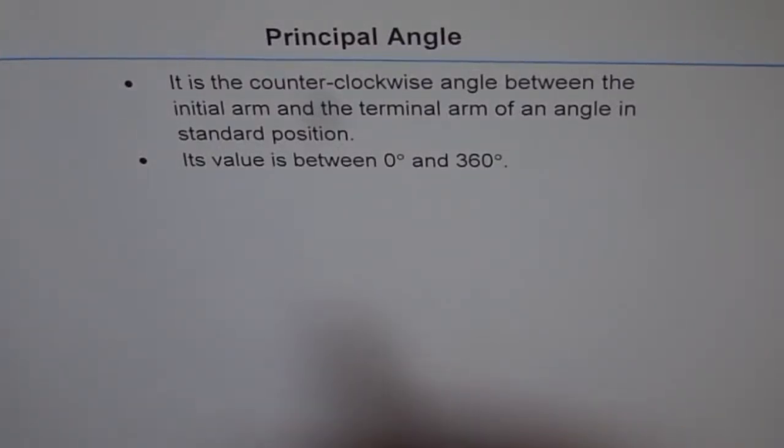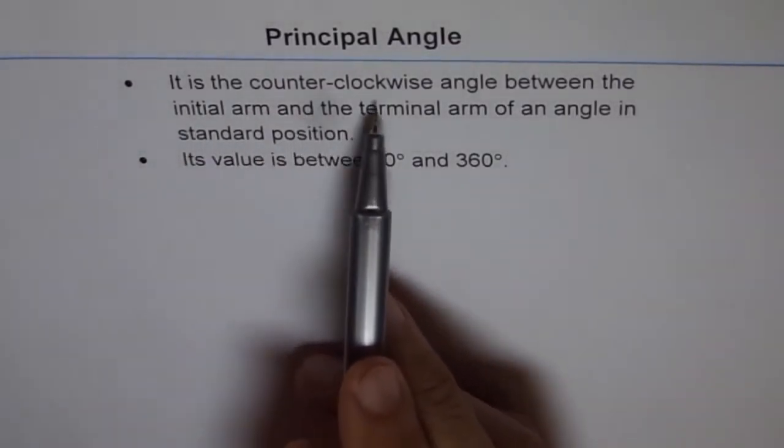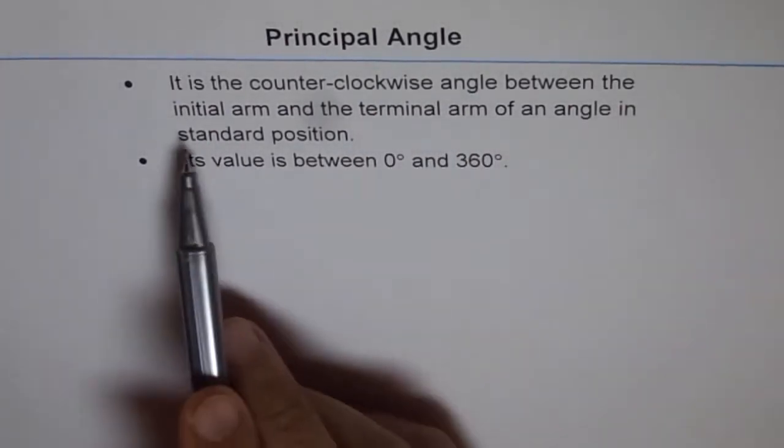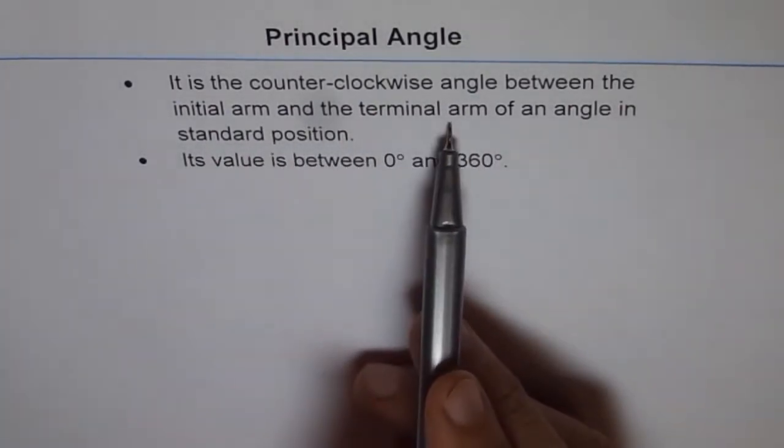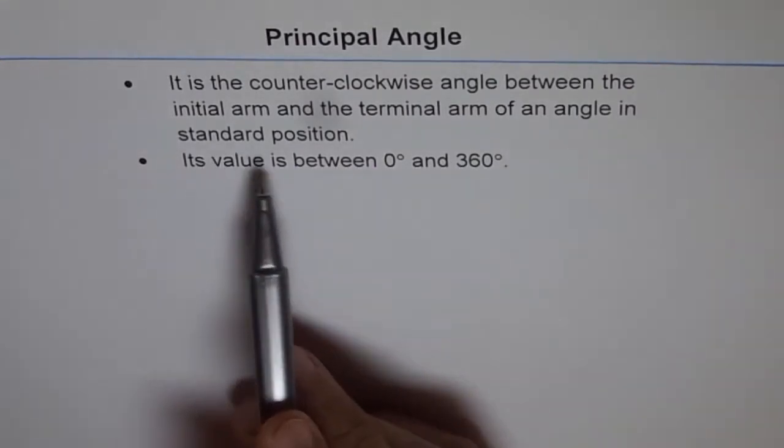Principal angle. It is the counterclockwise angle between the initial arm and the terminal arm of an angle in standard position.